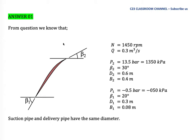From the question, we list all the information. We have RPM, flow rate, and then we divide the information for outlet with subscript 2 — pressure at outlet, angle at outlet, diameter for outlet, and width for outlet. The information for inlet with subscript 1 is listed similarly. The relationship between bar and kilopascal is also noted.